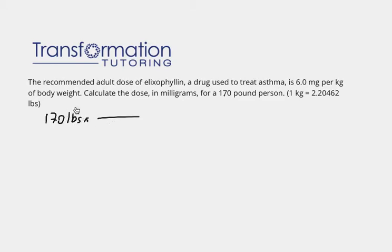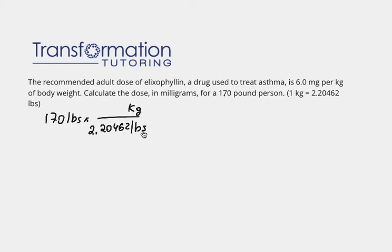Now, in order to convert, I see pounds here and I want to get rid of them. So I'm going to put pounds in the denominator. We have 2.20462 pounds in 1 kilogram, so I can convert pounds to kilograms: 1 kilogram equals 2.20462 pounds.